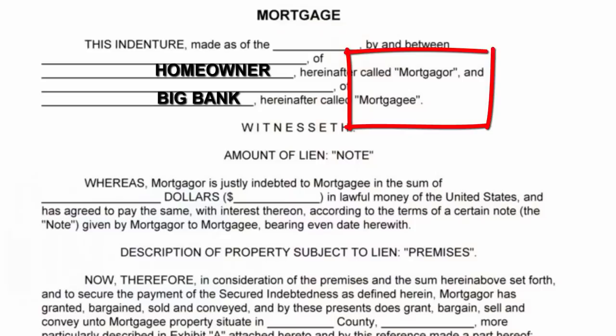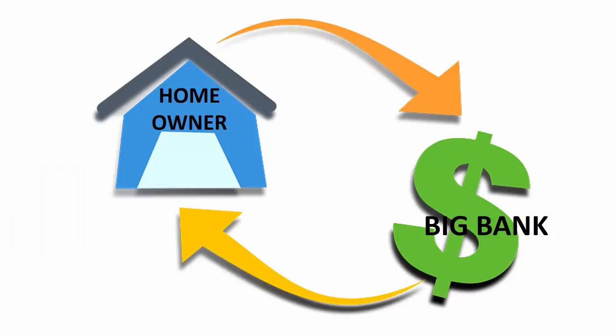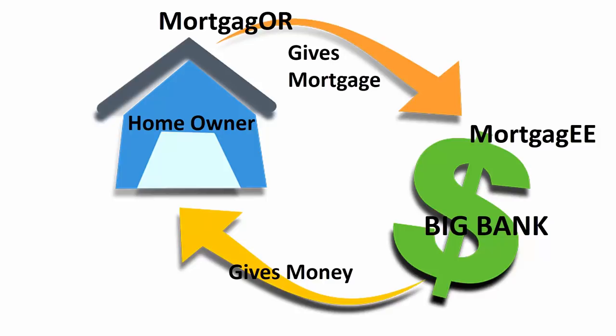The parties to a mortgage are the mortgagor — the borrower — and the mortgagee. The mortgagor gives and the mortgagee receives. If you go to the bank and borrow money, the bank gives you the money, but you sign the note and mortgage and give the mortgage to the bank as collateral. So you, the borrower, are the mortgagor — the giver — and the bank is the mortgagee, the receiver.